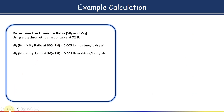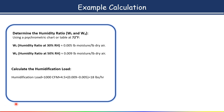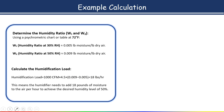Now substitute the values into the humidification load formula: Q is 1,000 CFM, 4.5 is the conversion factor, and W2 minus W1 equals 0.009 minus 0.005 equals 0.004. The result is 18 pounds per hour. This means the humidifier needs to add 18 pounds of moisture to the air per hour.